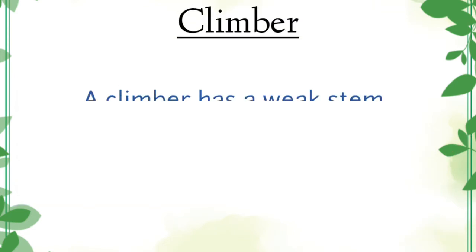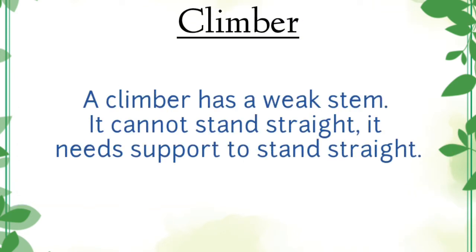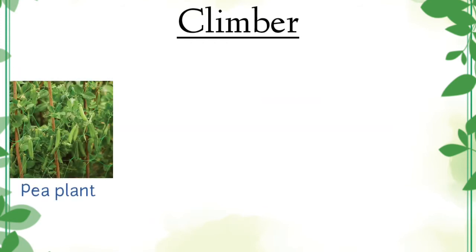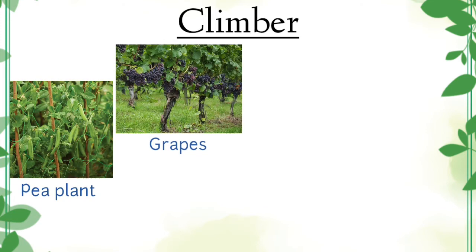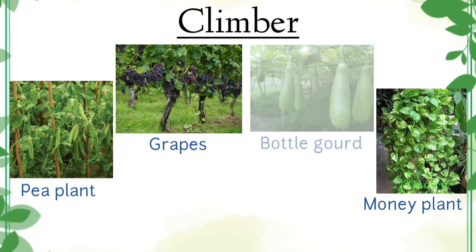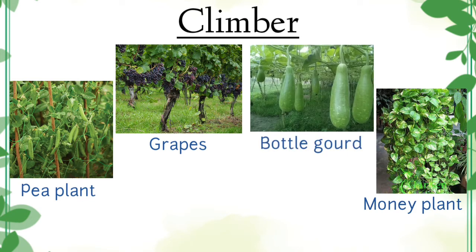Climber. A climber has a weak stem. It cannot stand straight. It needs support to stand straight. Examples of climbers are pea plant, grapes, money plant, bottle gourd, etc.